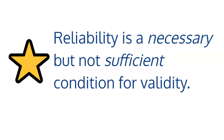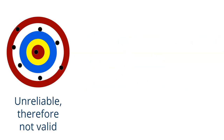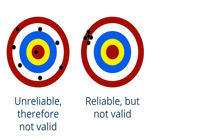If we imagine someone throwing darts at a target, this leaves us with three possible options. Option one: the person's dart throwing is all over the place — it's not reliable, and therefore it can't be valid either. They did hit the bullseye that one time, but that was a fluke. Option two: the results are consistent but not valid. The person is consistent in their dart throwing, but they're consistently missing the bullseye. This is the equivalent of a clock that's consistently off by 20 minutes.